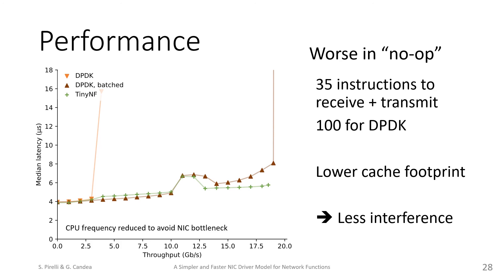It also has a lower cache footprint, causing fewer cache misses in the network function. These differences are not visible in artificial benchmarks, such as this no-op, in which instruction-level parallelism and cache sizes hide the differences and make DPDK shine. But when measuring real network functions, our driver causes less interference and improves performance.